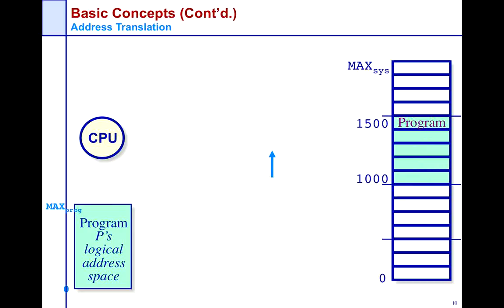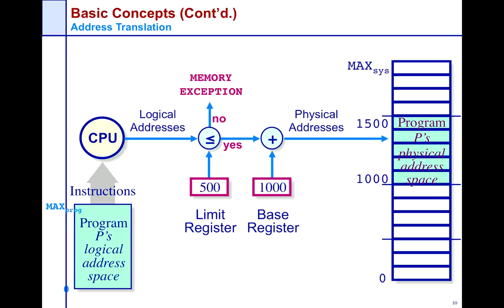Once that's been checked, you add it to a base register which is essentially a relocation register which says address 0 on this program really corresponds to address 1000 in physical memory. Essentially it's an add operation — you take whatever address you want, add it to 1000 which is where this program starts off, and then you get your physical address which is what the rest of the system sees and what you issue into the system.